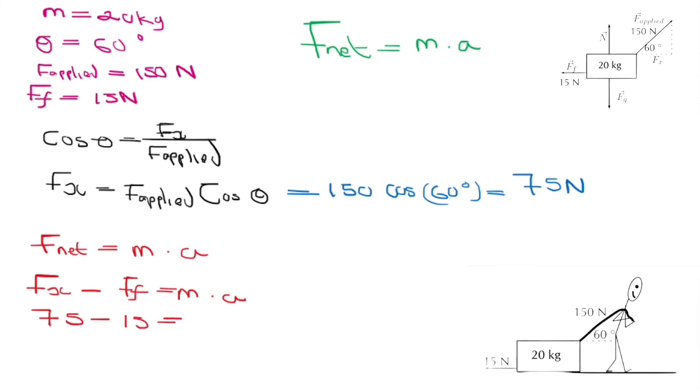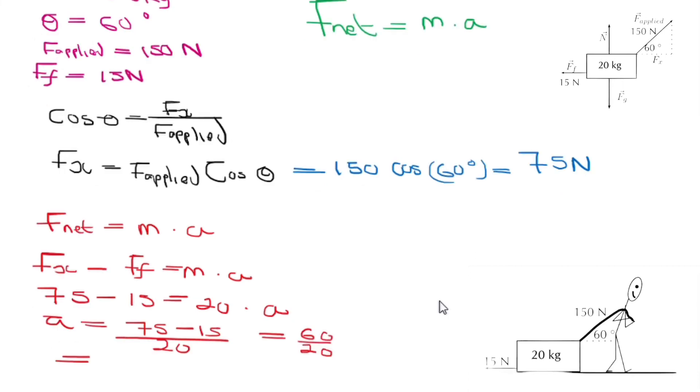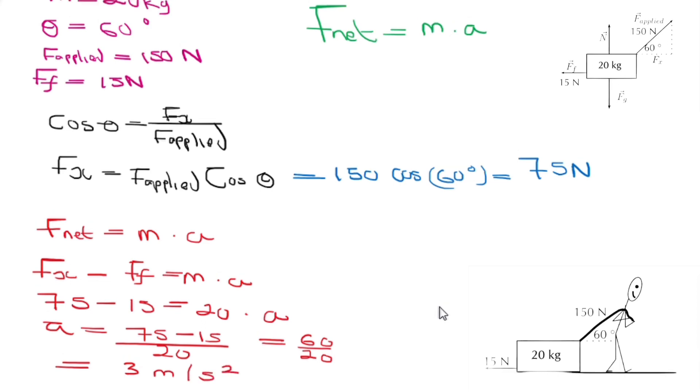If you make the acceleration subject of the formula, you should have 75 minus 15 over 20. You should get 3 meters per second squared, and that will be your acceleration. I hope that makes sense.